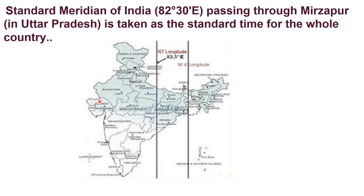Gujarat and Arunachal Pradesh have a time lag of two hours. However, we cannot follow this difference in time because if each state had a different time, it would be very difficult to make timetables for train and flight arrivals and departures. So we follow one common time for all of India, called Indian Standard Time. We have chosen a standard meridian - one particular longitude - which is 82 degrees 30 minutes east, passing through Mirzapur in Uttar Pradesh.